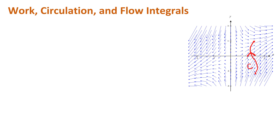It's important to understand that the vectors in the vector field could not be the only force acting on an object moving through it. If the object had no other forces it would follow the vectors. Think about a fish that has its own power to swim, but also has current pushing on it. Basically the idea is that we want to calculate the work done by vector field F as an object moves along C.